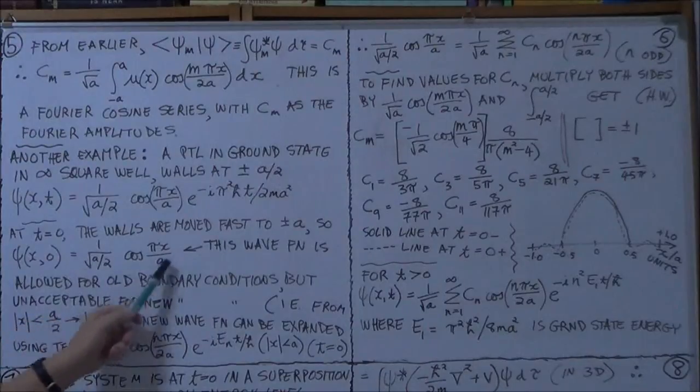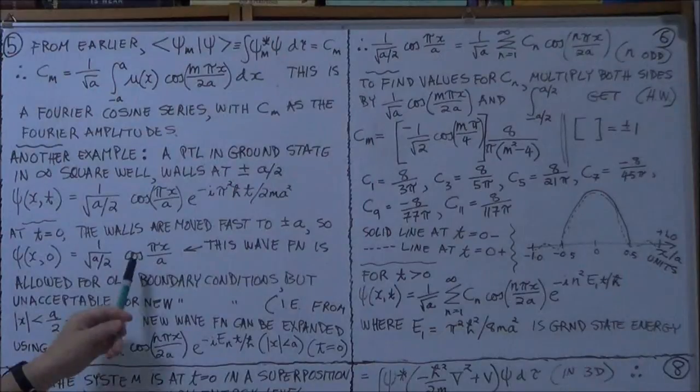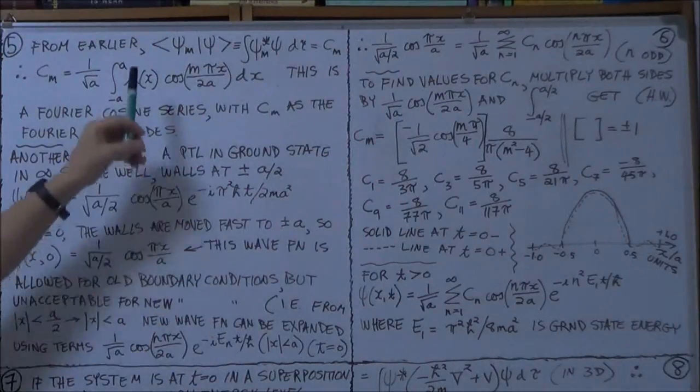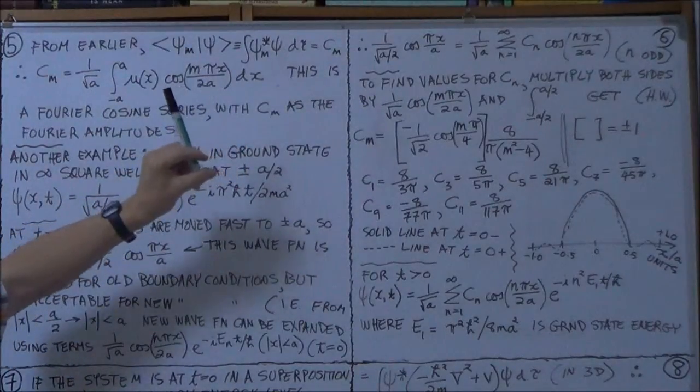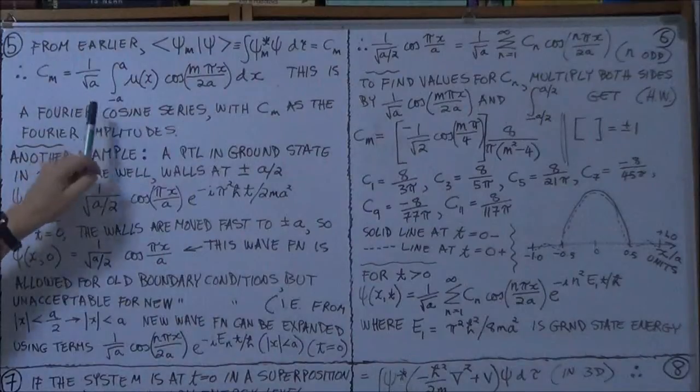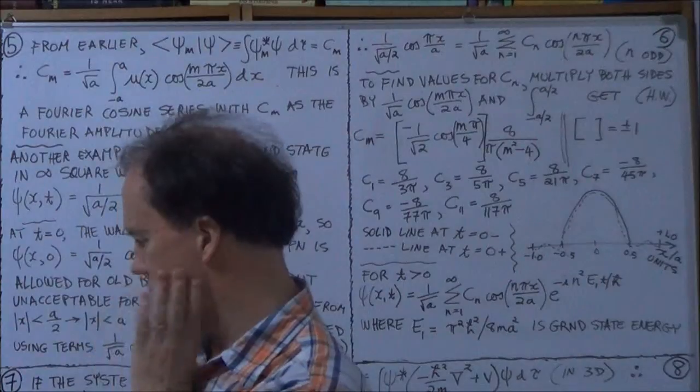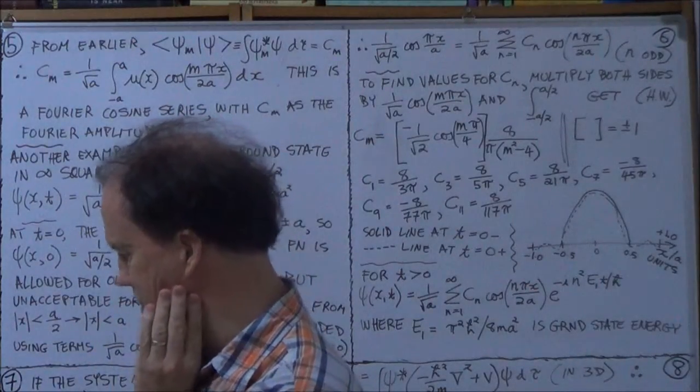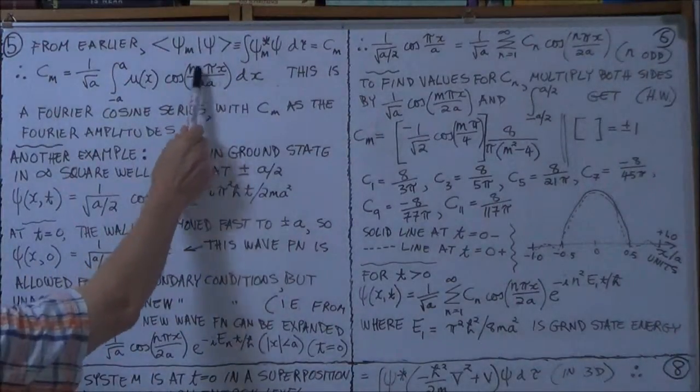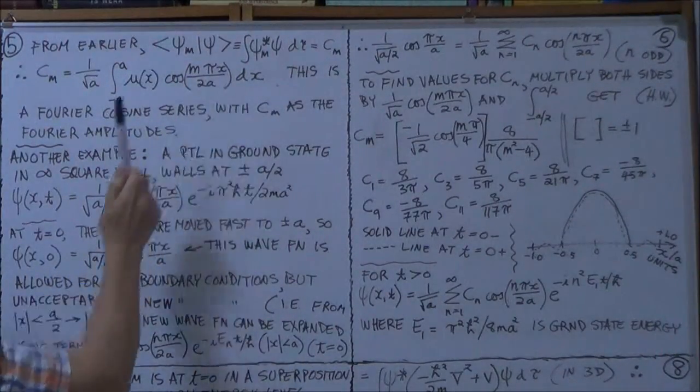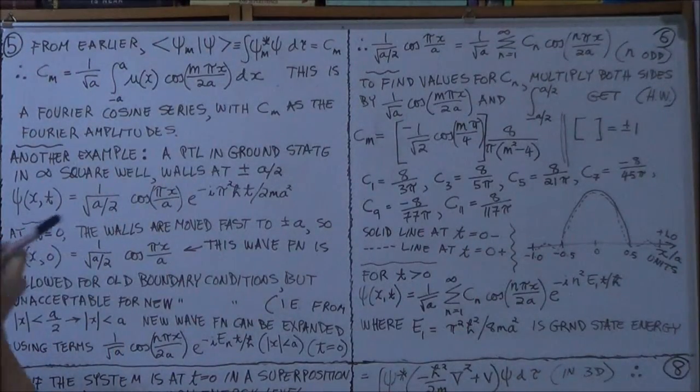So, we can then express this as, using the basis states that we found earlier when the infinite barrier was situated plus or minus a. And they were of the form cosine n pi x over 2a, right? So, well, here, yeah, here. So, let's now, let's find...